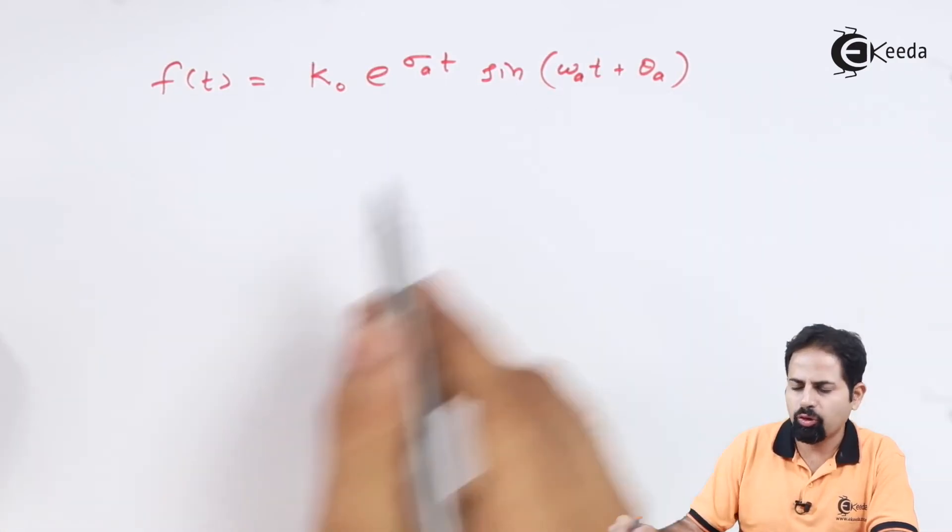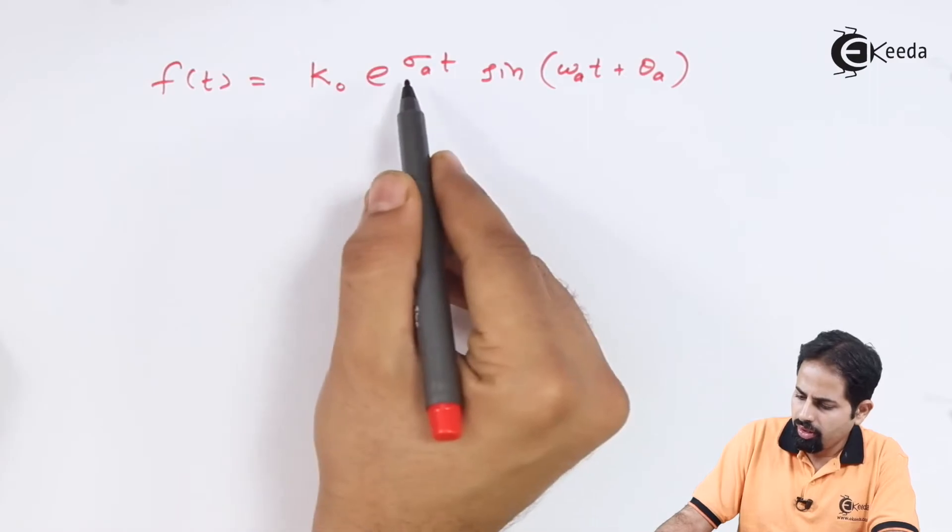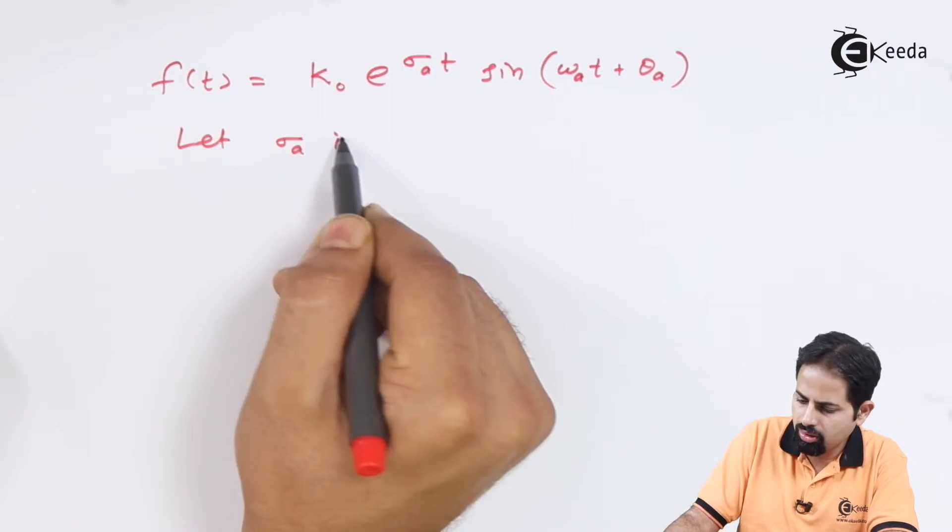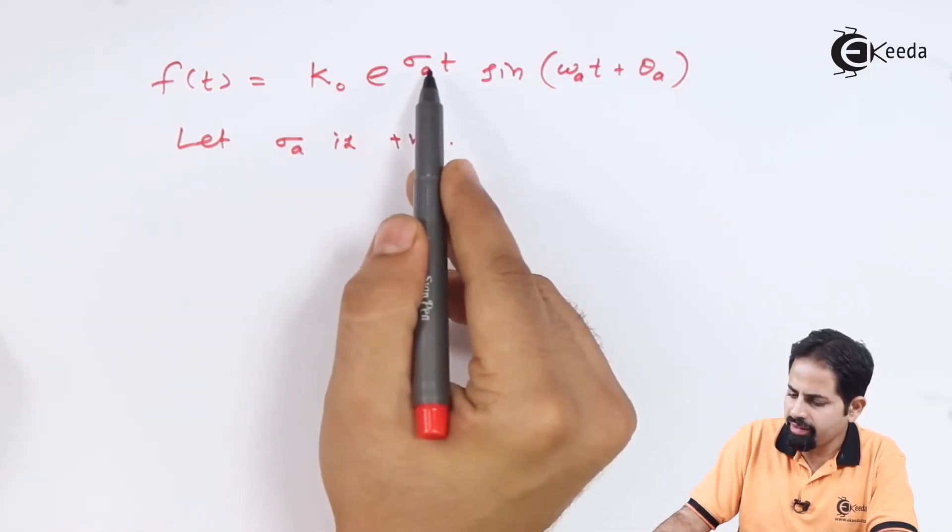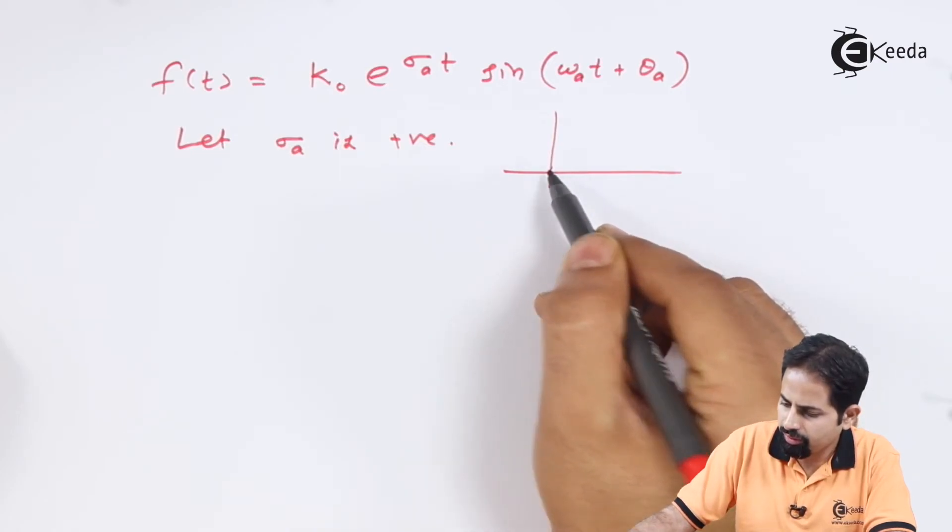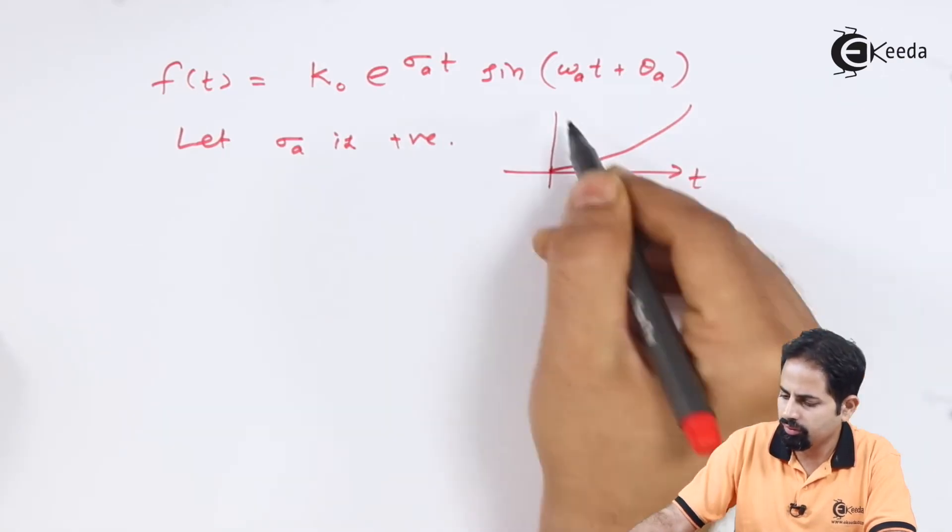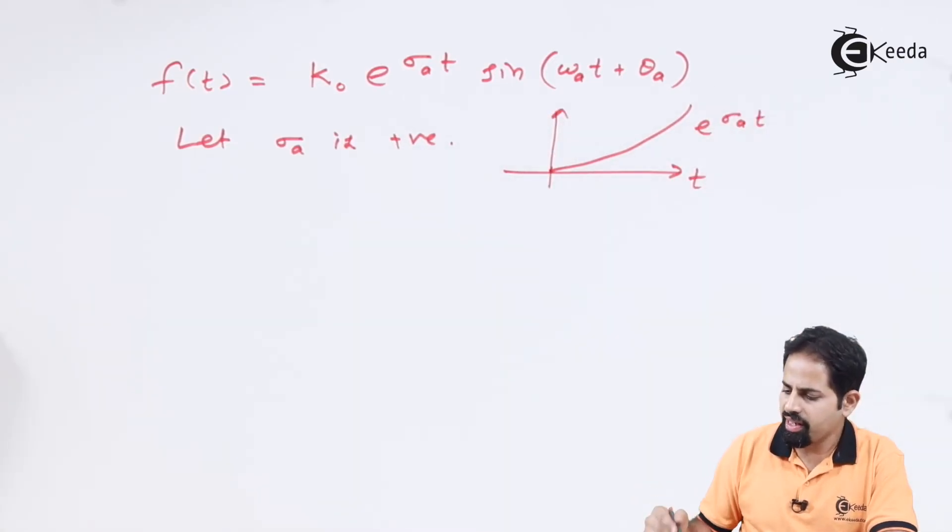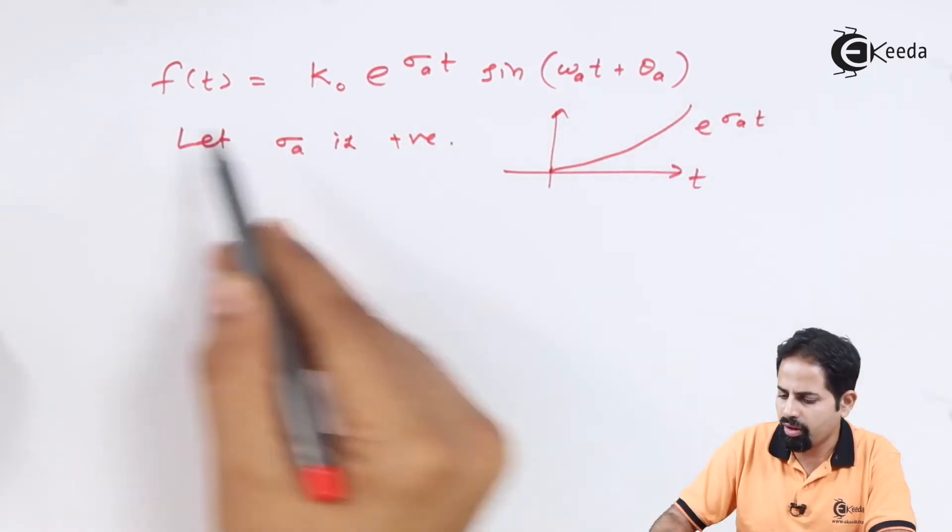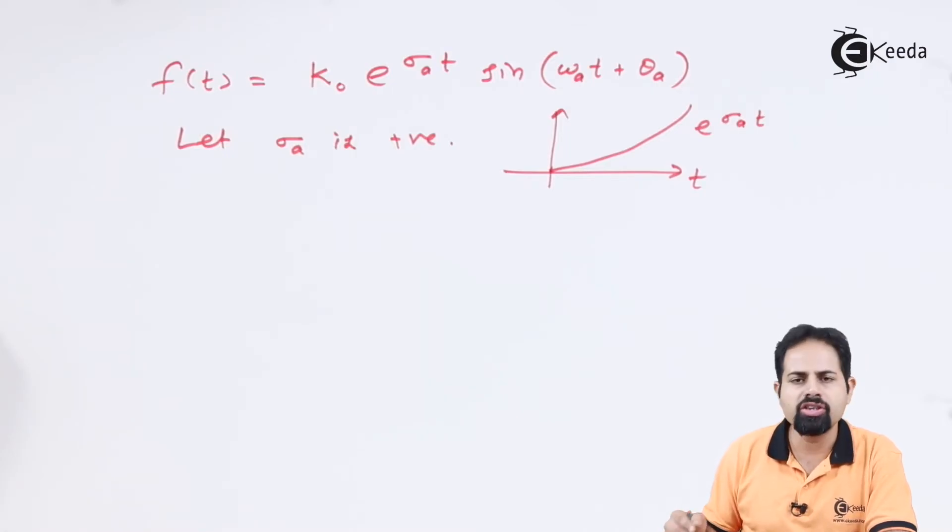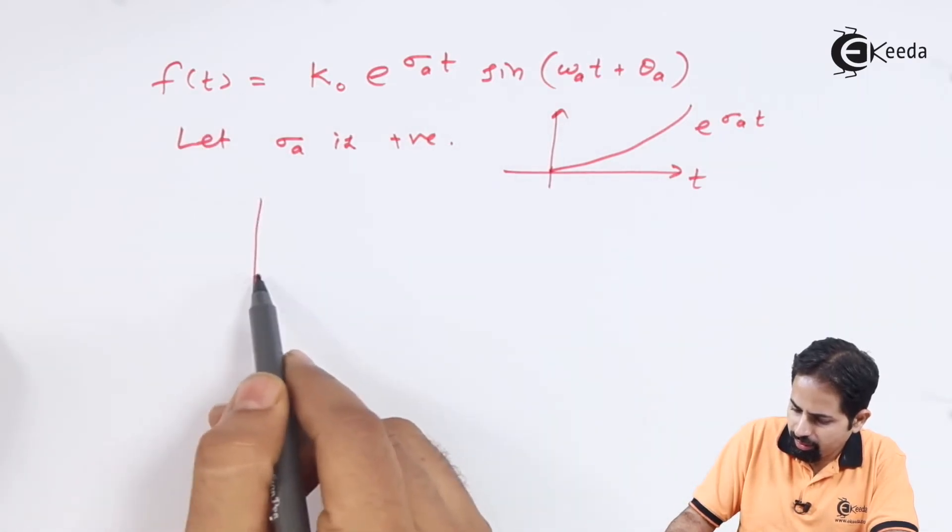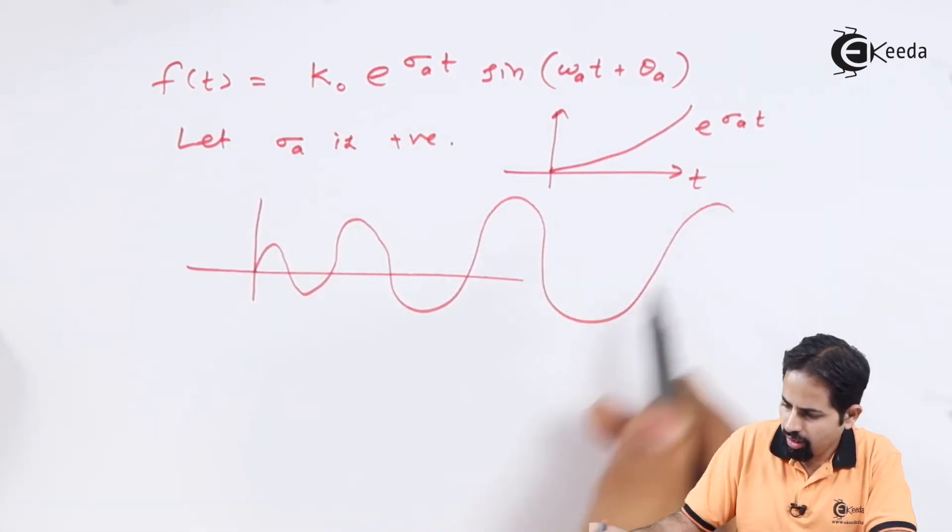And now you can see if you try to plot this term on time domain. If this sigma A is positive, suppose is positive, then it is nothing but going to be increasing exponential like this. And if it is increasing exponential as time t goes to infinity, this also signal my function will also go to infinity, which is not true and which is not realistic.